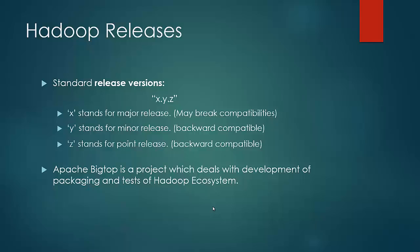Apache Bigtop is a project which deals with the development and packaging of a compatible ecosystem. This is where other vendors like Cloudera and Hortonworks score over Apache. Their releases are easier to understand and are compatible within the ecosystem.